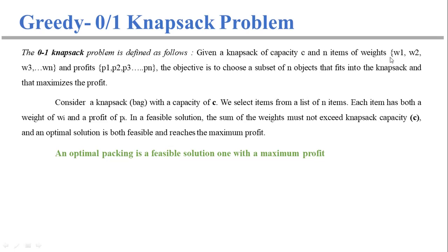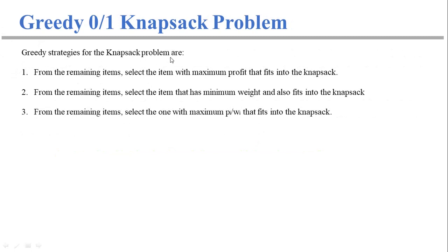For example, the first item has weight w1 and profit p1, the second item has weight w2 and profit p2, and so on. The objective is to choose a subset of N objects that fits into the knapsack and maximizes the profit. We select items from a list of N items; in a feasible solution the sum of weights must not exceed knapsack capacity, and an optimal solution is both feasible and reaches the maximum profit.